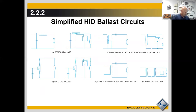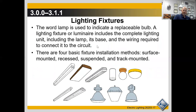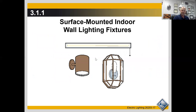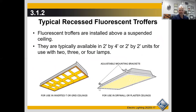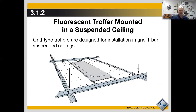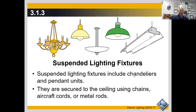Section 3.1.3 covers lighting fixtures. Types include surface mount, recessed, troffers — which set into a ceiling grid drop ceiling — and suspended fixtures. Suspended lighting fixtures include chandeliers and pendants — that's a test question. Chandeliers and pendants are considered suspended lighting fixtures.